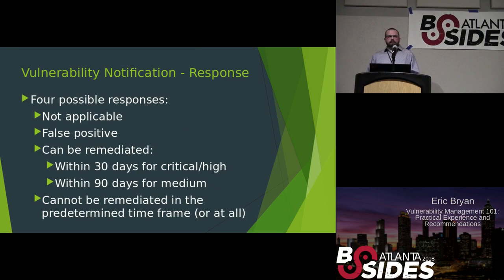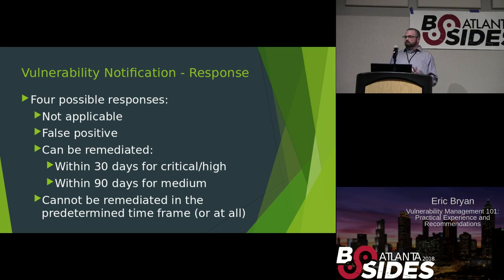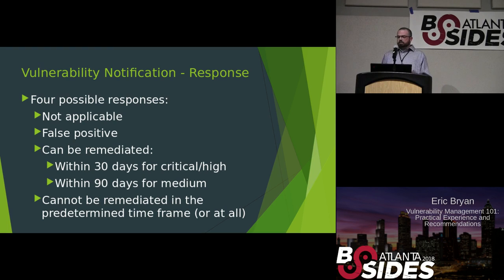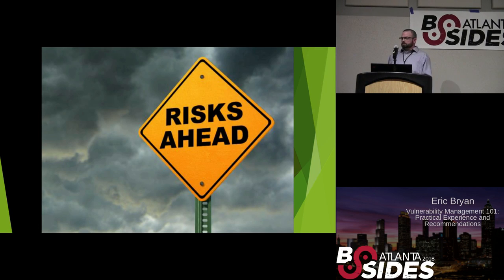In the response document, we found four possible responses the teams could give us: not applicable to our organization — we could throw it out and move on; false positive, can be disregarded; applicable and can be remediated within 30 days for critical or high, and 90 days for medium; and finally, applicable but cannot be remediated in the predetermined time frame or at all. For these last cases, we would do a risk acceptance plan.